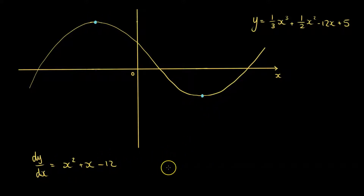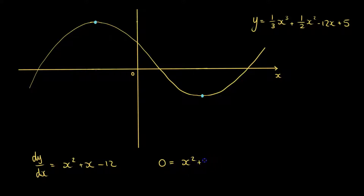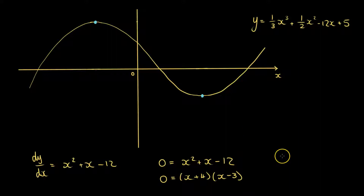We set this equal to zero because at those two points the gradient is going to be equal to zero. We can now factorise the right-hand side. We get (x + 4) in one bracket and (x − 3) in the other. So we know that our x value must be minus 4 or x must equal 3.